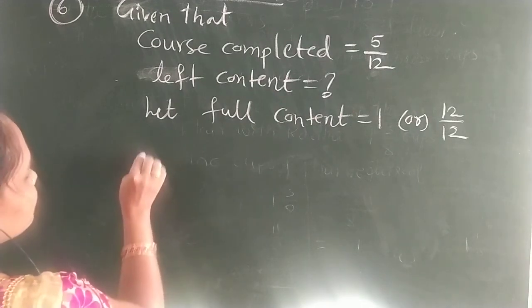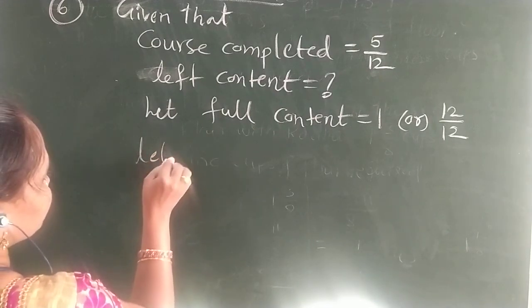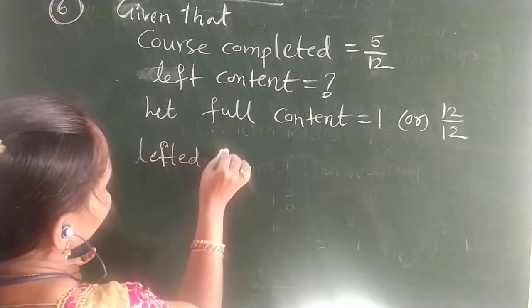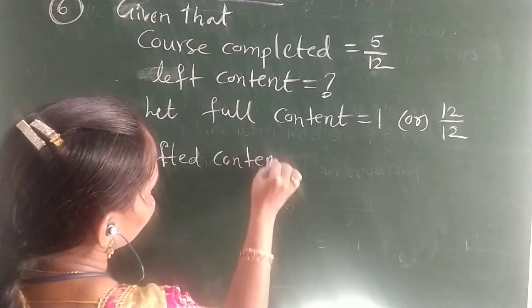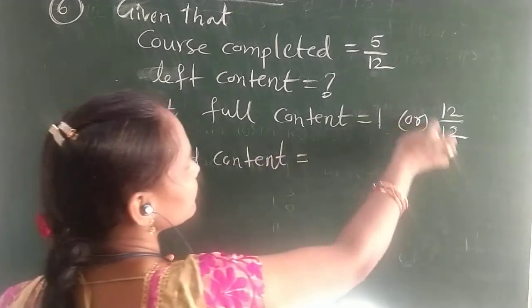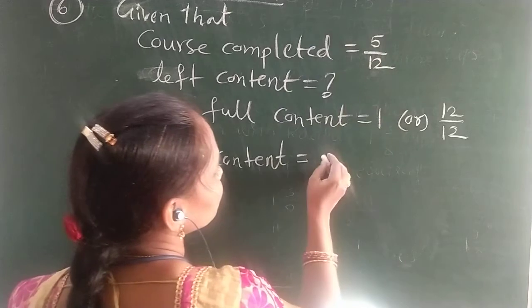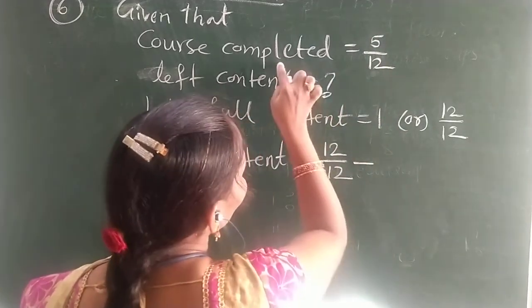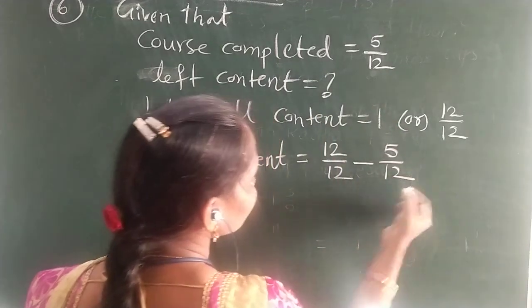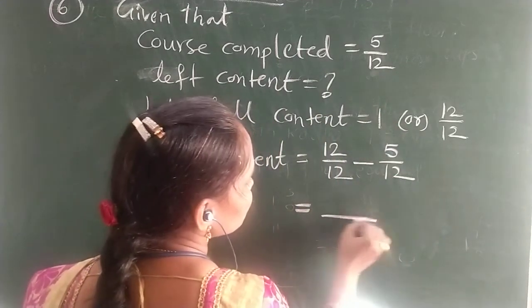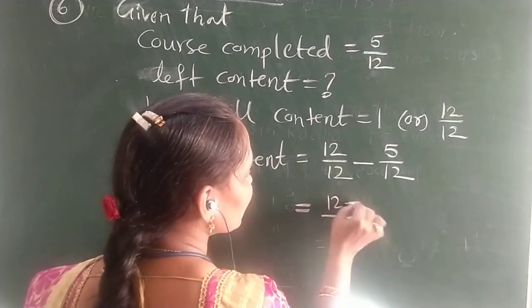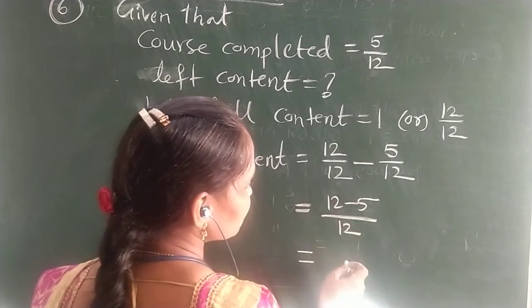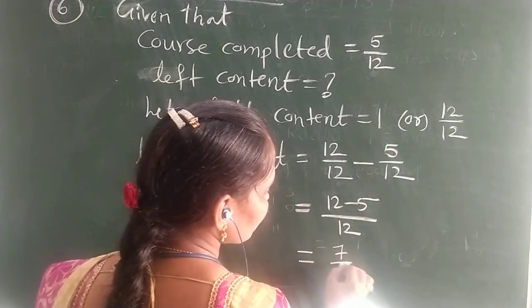Now, left content is equal to total content minus what he has completed. Total content, full content, 12/12 minus what he has completed, 5/12 content he completed. So same like fractions, you can do directly subtraction of numerators. 12 minus 5, 7/12, it is a left content.